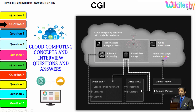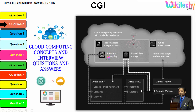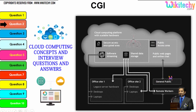In cloud computing, there is a public access area — public web pages for end users — and also secure data access, shared data storage, and software streaming. Companies can use it as a private kind of environment, and the public can also use it to access web pages or websites. That's how cloud computing works.